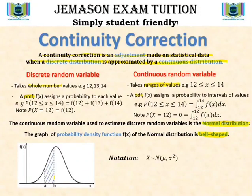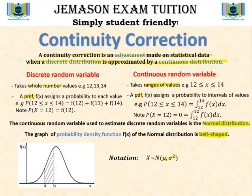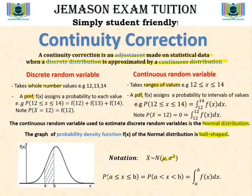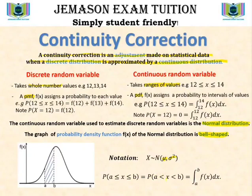The notation of the normal distribution is that x follows the normal distribution with parameters mu and sigma squared, where mu is the mean and sigma squared is the variance. The probability that x lies between a and b, whether the boundaries are included or not, gives the same probability. So P(a ≤ x ≤ b) equals P(a < x < b), and it equals the integral from a to b of f(x)dx.